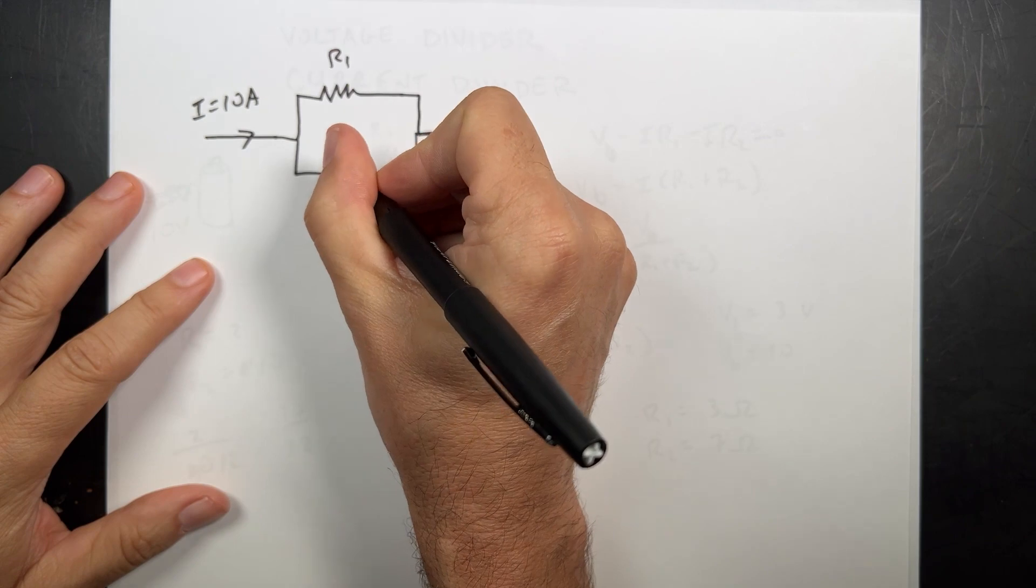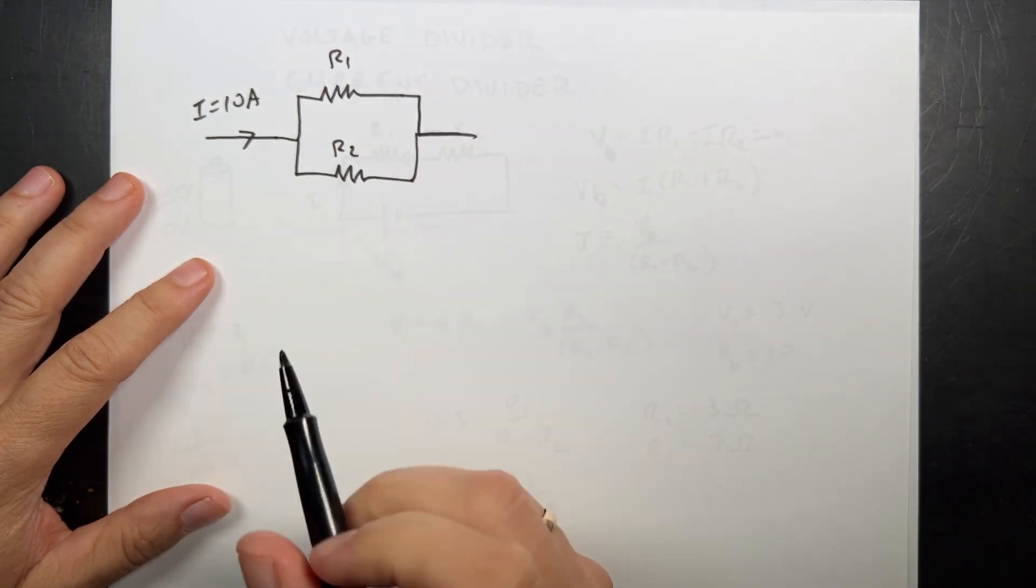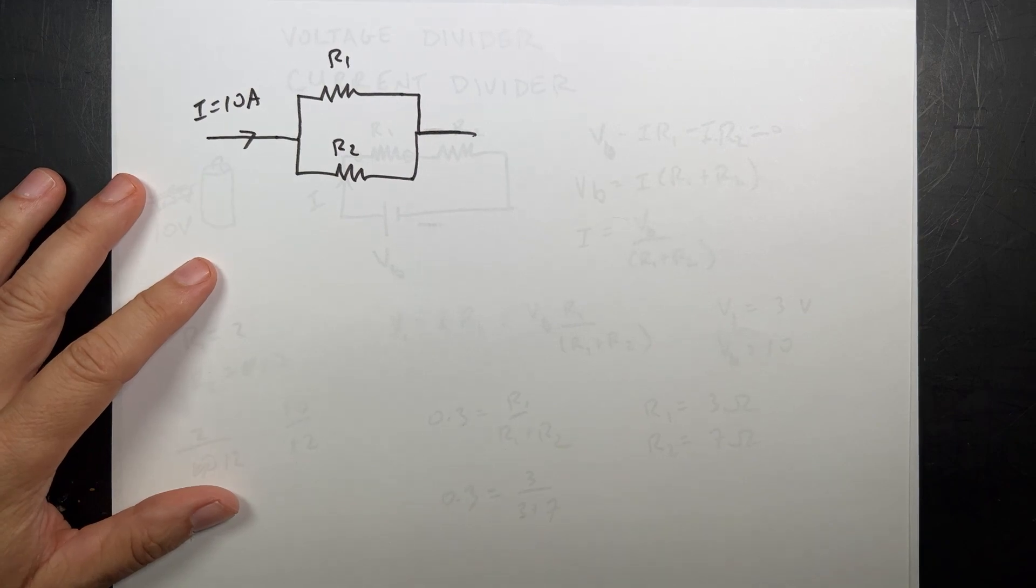So we'll call that R1 and we'll call that R2. And maybe I want 3 amps to go through this. So we're going to use a current divider.